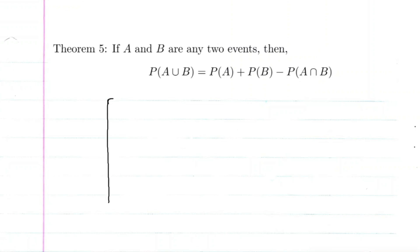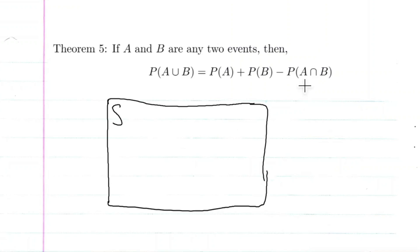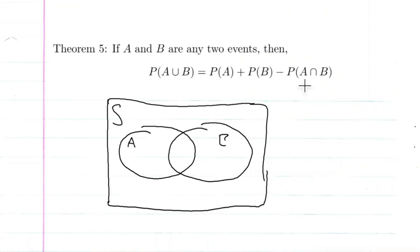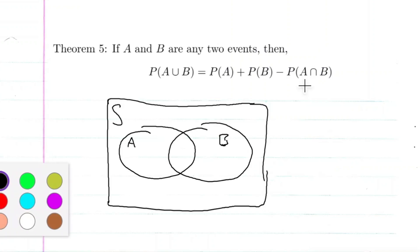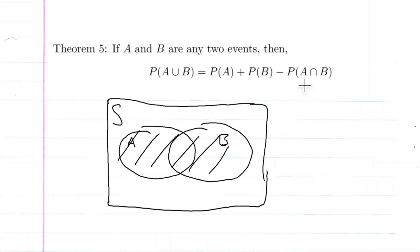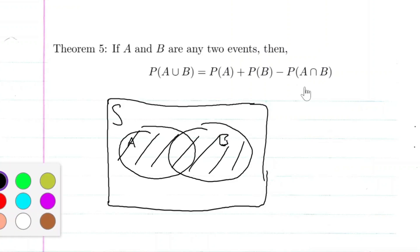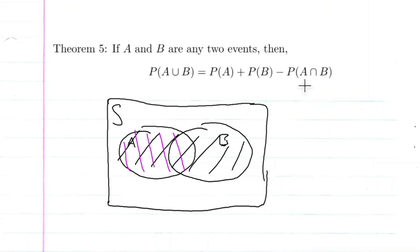This is our sample space — we have A here and we have B here. A union B is all of this area. The probability of A is the purple region, and the probability of B is this region here.